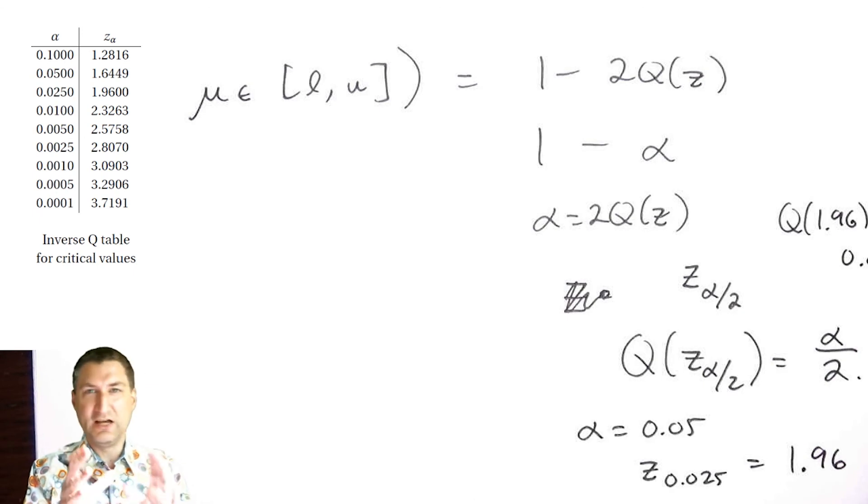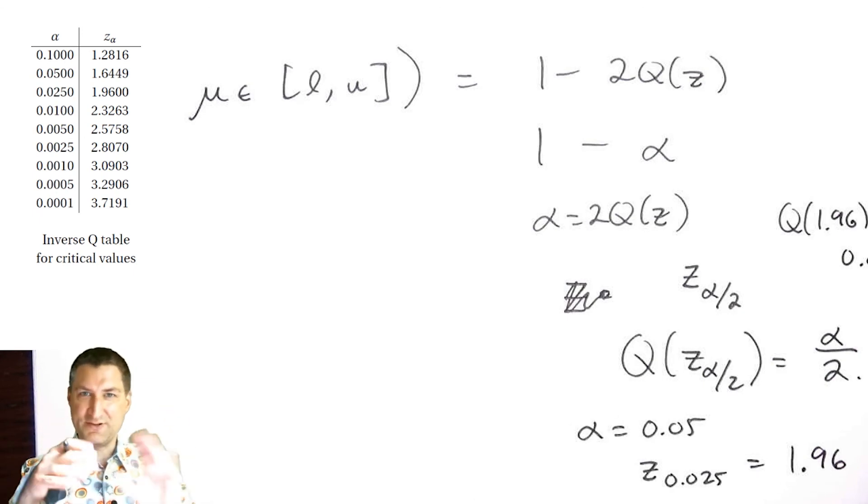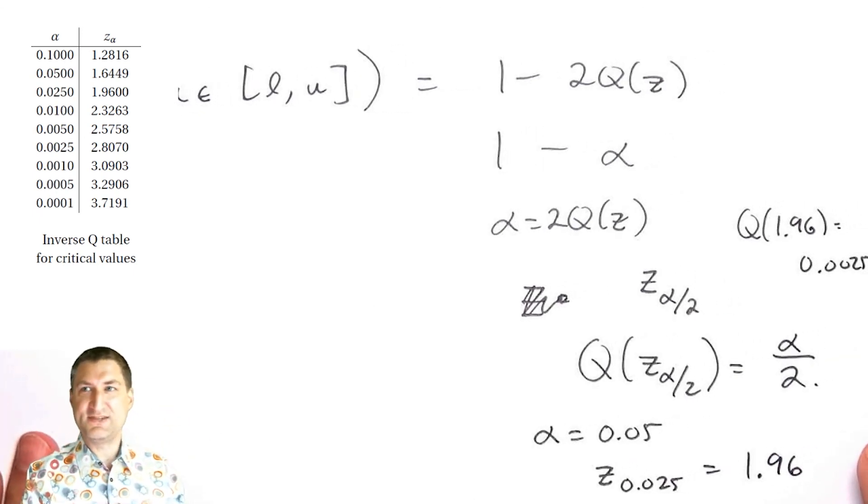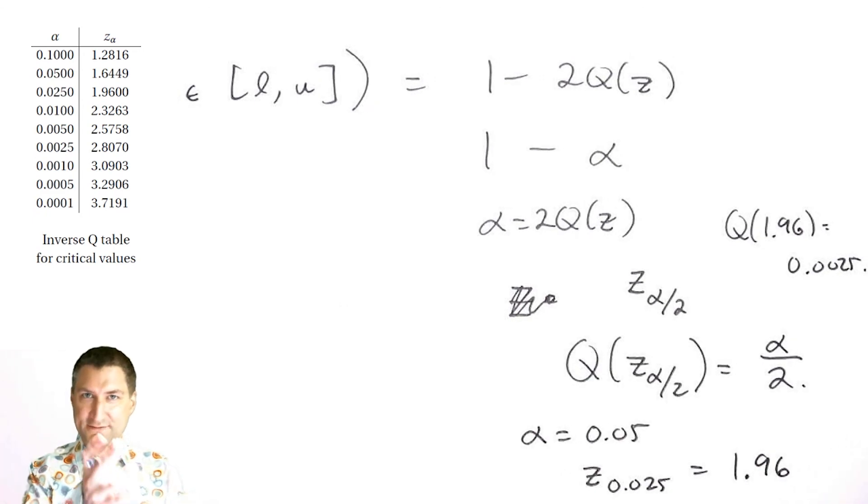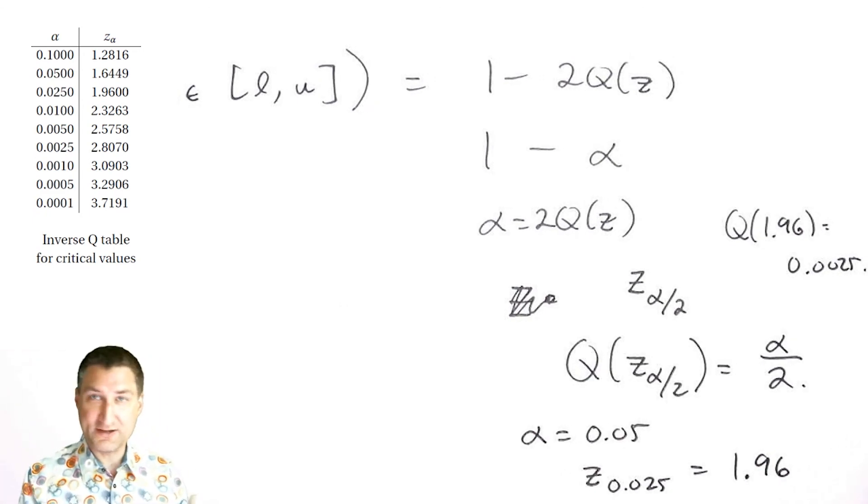Instead of having to look at the forward Q tables and find these averages, you can look at this inverse Q table. Let me do a quick example to show how you'd use this in practice.